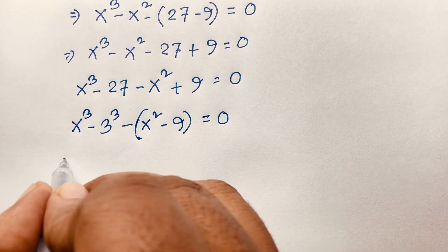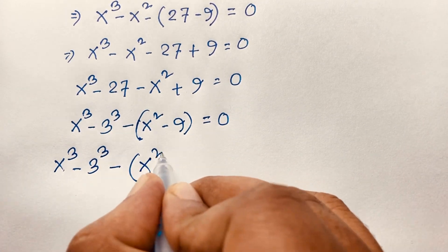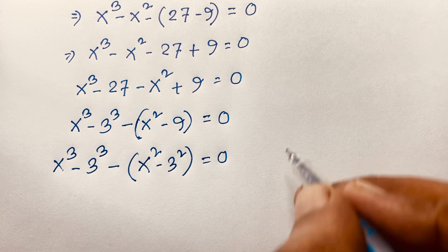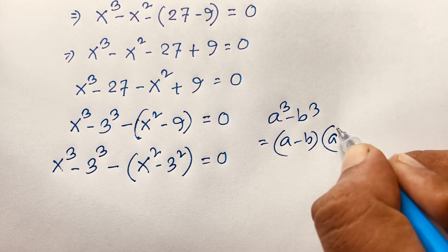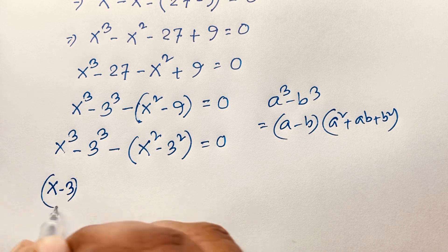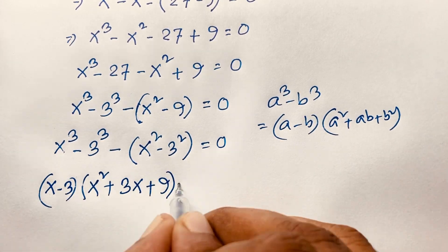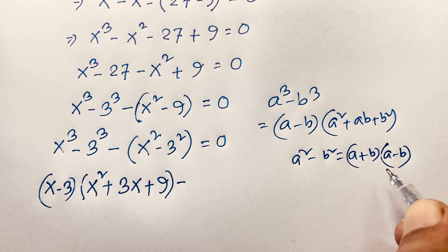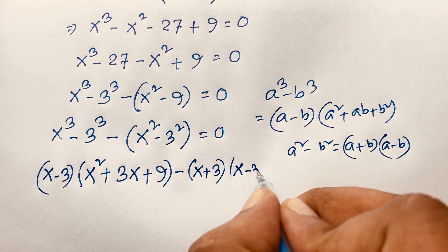Now in this expression, you can see here is x cubed minus 3 to the power of 3, and here is x squared minus 3 squared, equal to 0. We will apply two identities: a cubed minus b cubed, and a squared minus b squared. Following the identity a cubed minus b cubed equals (a minus b)(a squared plus ab plus b squared), this expression becomes (x minus 3)(x squared plus 3x plus 9). And for a squared minus b squared equals (a plus b)(a minus b), it becomes (x plus 3)(x minus 3), equal to 0.